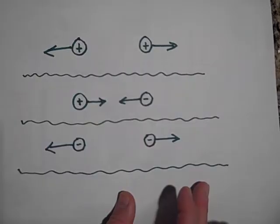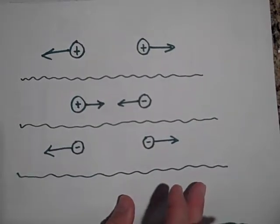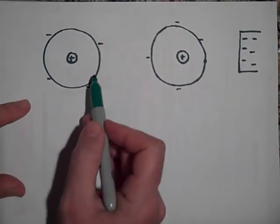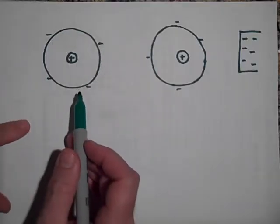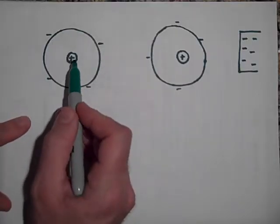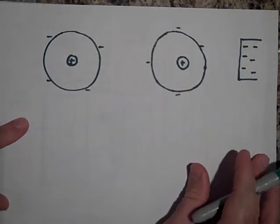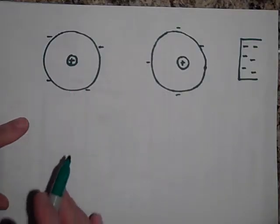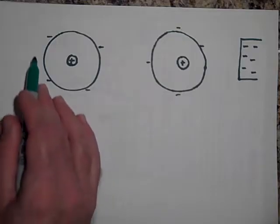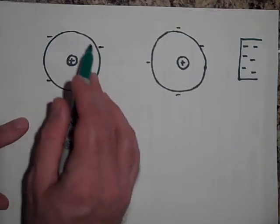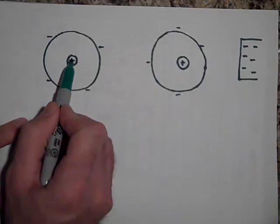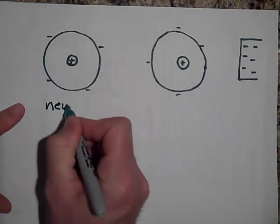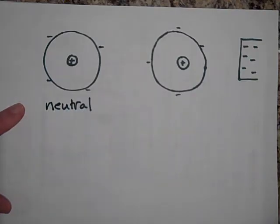Let me show you something about polarization. If you have an atom that has the electrons on the outside of the atom and the protons in the middle of the atom, then the center of the positive charge is right there. But the center of the negative charge — where all of this negative charge is centered — is again right there. So they both have the same center of charge, and we'd say this is neutral, meaning that it doesn't have any charge.